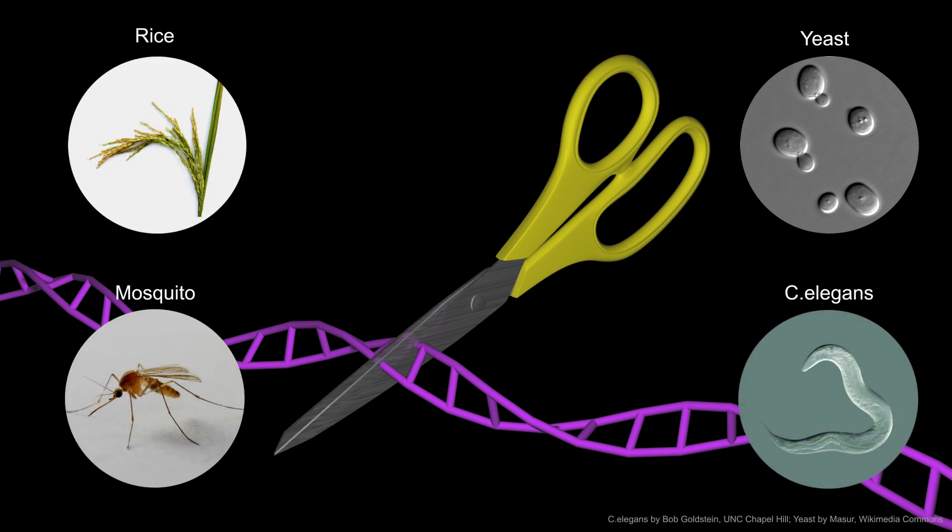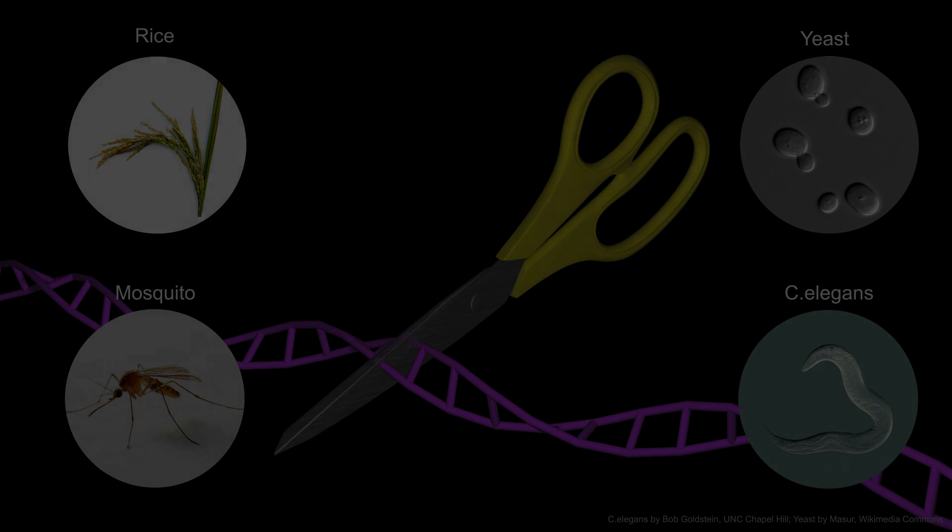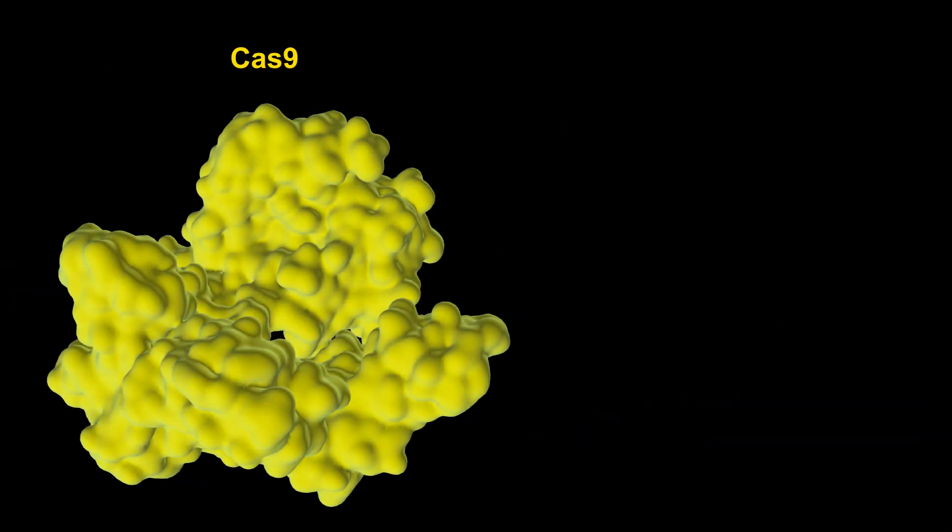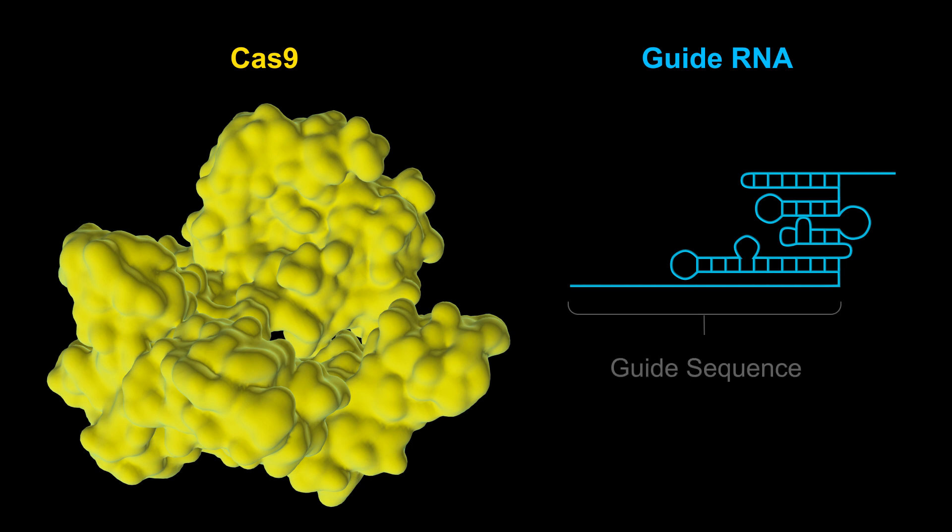Here's how it works. To edit a cell's genome, scientists introduce the Cas9 protein and a guide RNA with a specific sequence that will direct where the Cas9 protein will make a cut in the DNA.